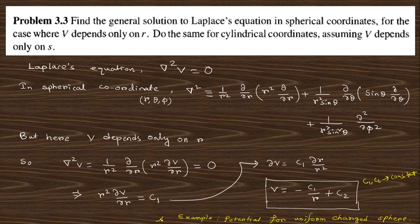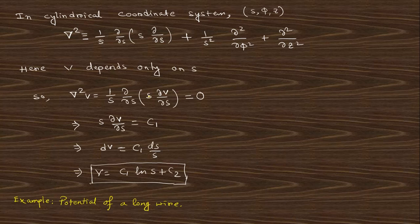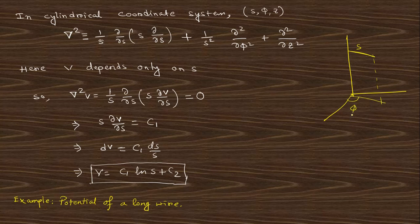For the cylindrical coordinate system, ∇²V in cylindrical coordinates (s, φ, z) is (1/s)(d/ds)(s dV/ds) plus other terms. If V depends only on s, we write ∇²V = 0 accordingly, and integrating gives D s/s = ln s. So V = C₁ ln s + C₂, where C₁ and C₂ are constants.